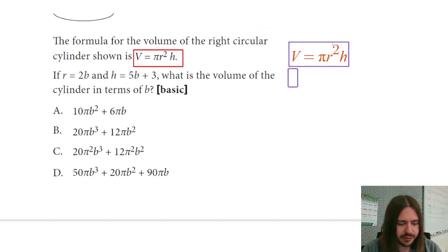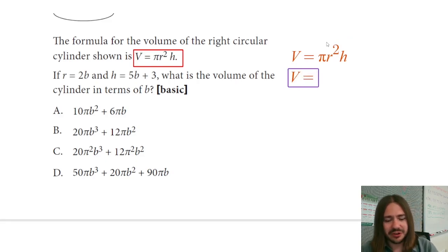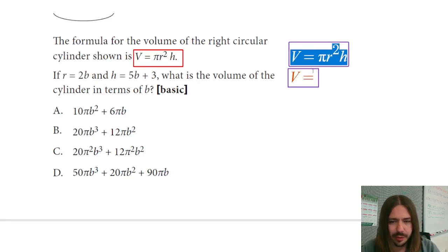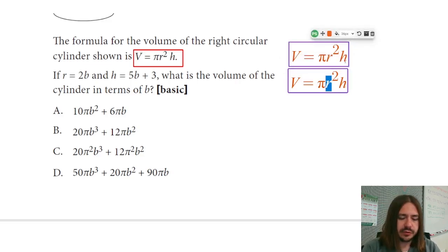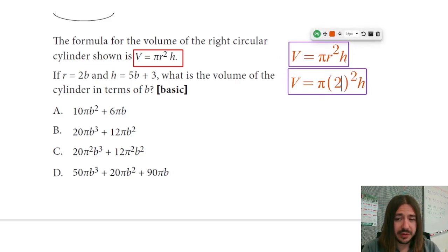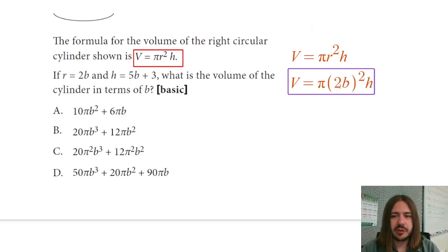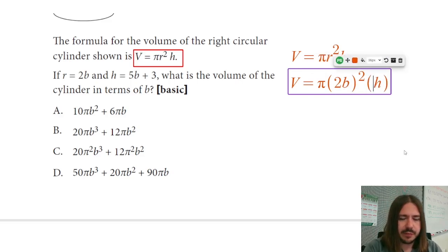We don't really need the picture now - all we're going to do is substitute. For R, we're going to write 2b. Make sure you put that in parentheses. That could be where most people get it wrong, forgetting the parentheses and only squaring the b. But you've got to square the 2 as well. Then for the height, that's 5b plus 3.